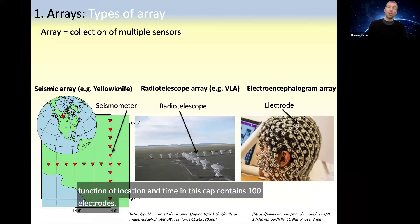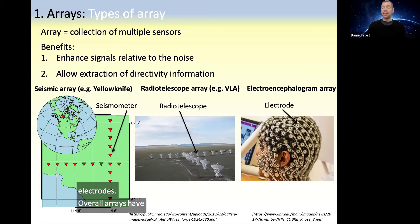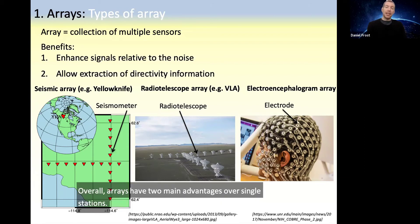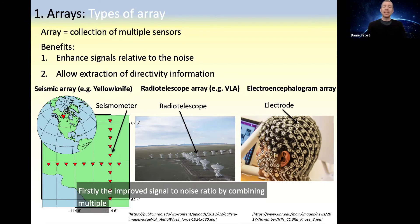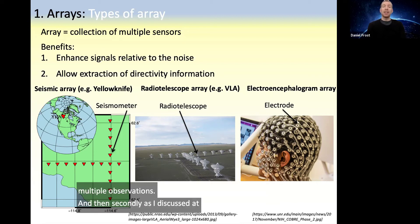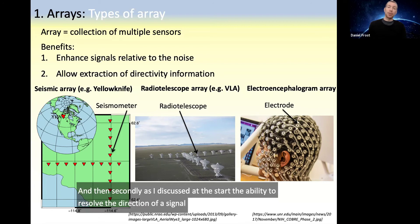Overall, arrays have two main advantages over single stations. Firstly, the improved signal-to-noise ratio by combining multiple observations. And secondly, as discussed at the start, the ability to resolve the direction of a signal by looking at the differences between multiple observations.